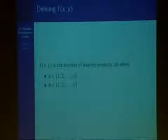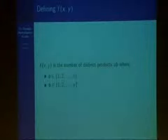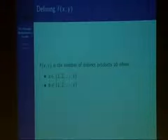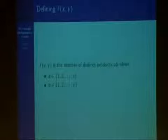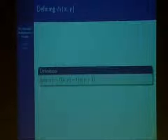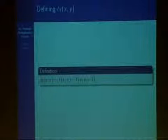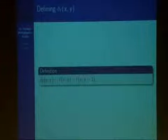Now we're going to generalize this problem. I developed the function f(x, y), which is the number of distinct products a·b, where a is taken from the set 1 through x, and b is taken from the set 1 through y. To analyze this function, we're going to define delta sub f of (x, y), which is equal to f(x, y) minus f(x, y−1). Alternatively, we can think of this as the number of new distinct products that can be formed when y is added to the set of possible values for b, the second factor.